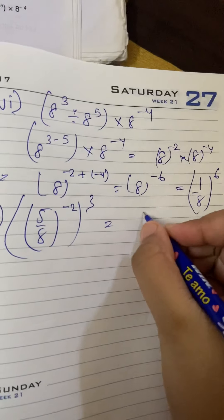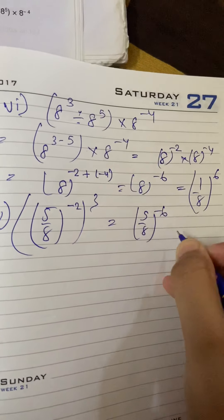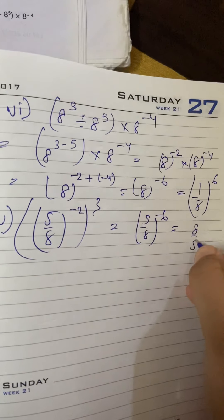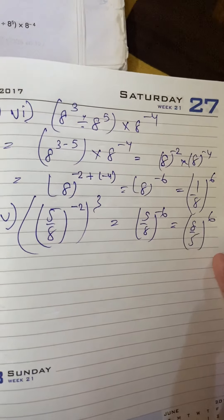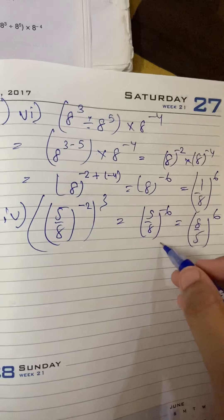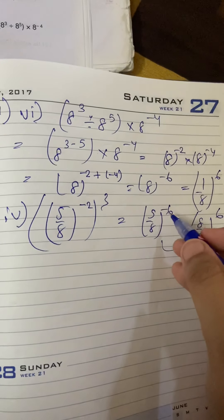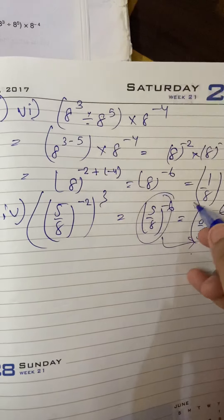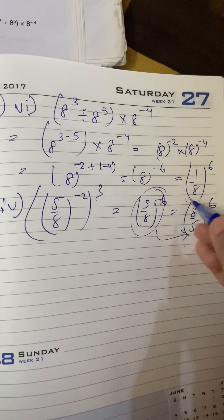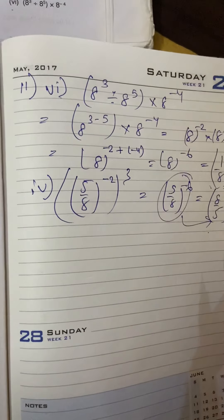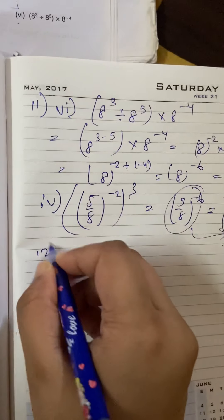To, yaha pahalye liikhenge 5 by 8 to the power minus 6. Phir kardengi 8 by 5 to the power 6. Yhe uska reciprocal nahi hai. Matlab, yhe puri rational number ka reciprocal yhe nahi hai. Kyunki bas anug minus sign hattayin.